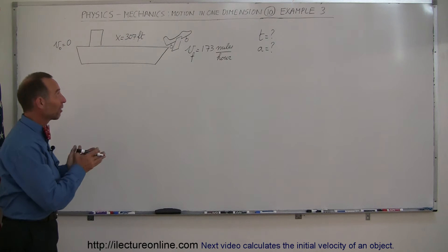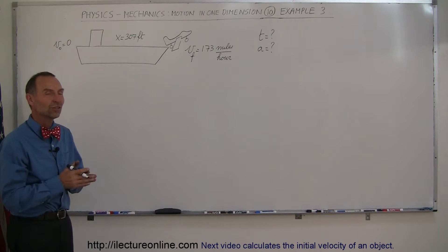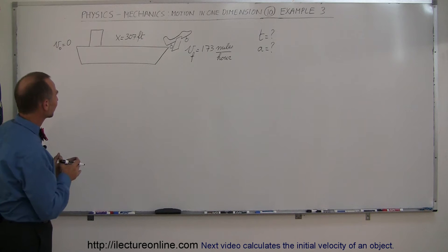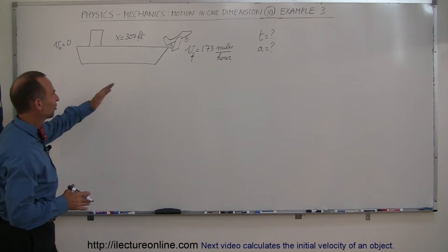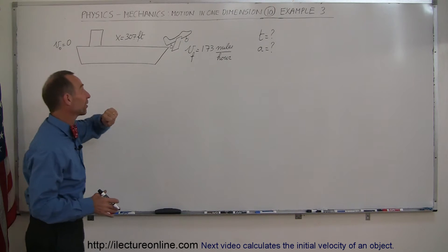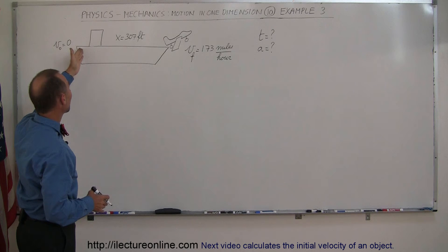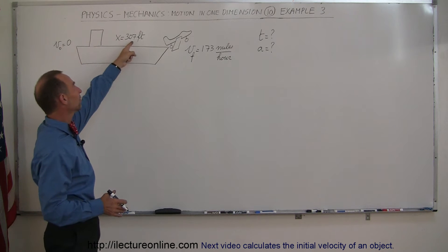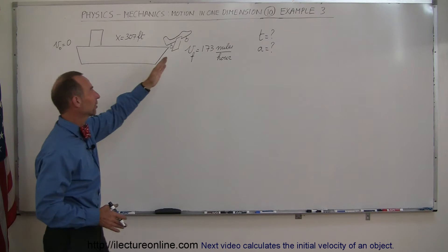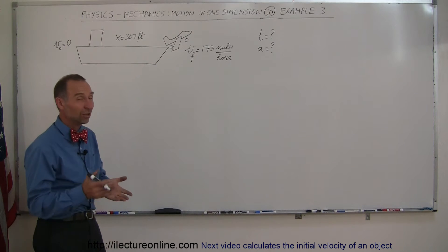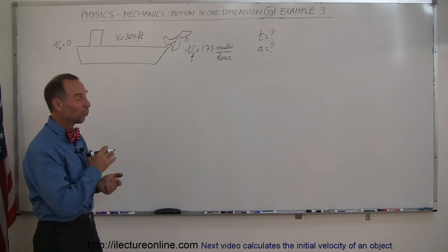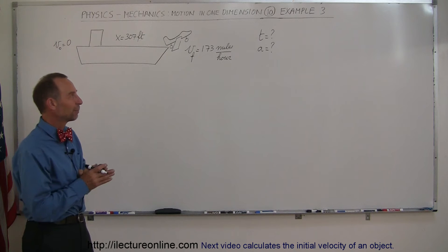Here in our third example of how to solve problems in motion in one dimension, we have an aircraft carrier and a fighter jet taking off from the aircraft carrier. Let's say that it speeds up over a distance of 307 feet from 0 to 173 miles per hour. And the question is, how long did it take? And what was the acceleration of that plane?